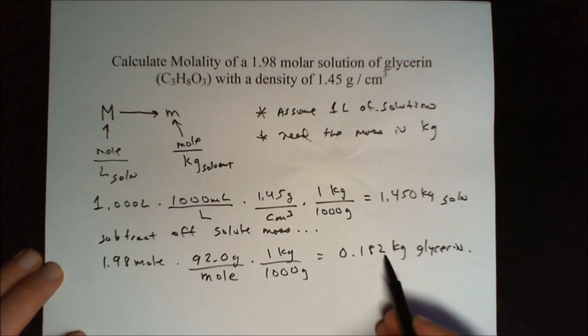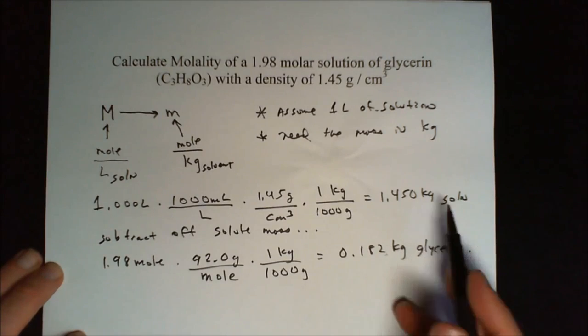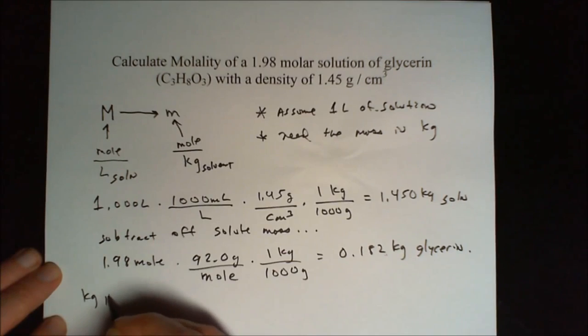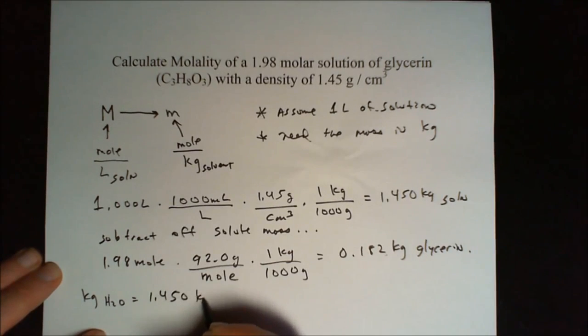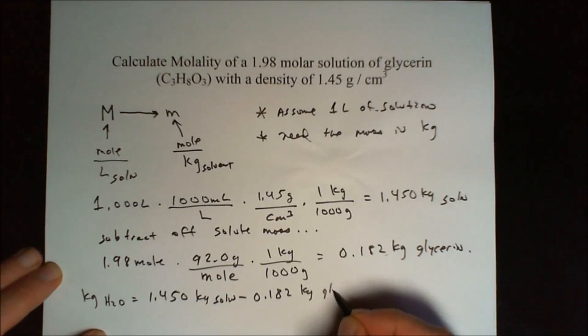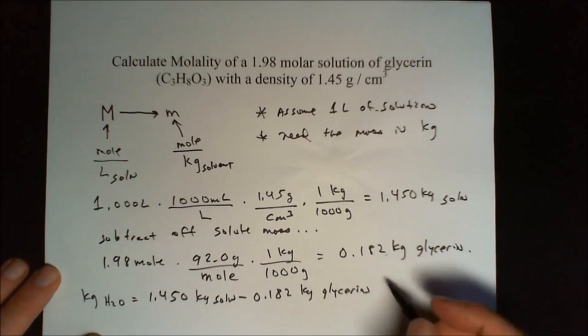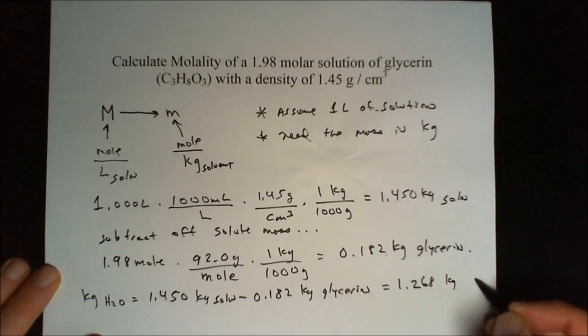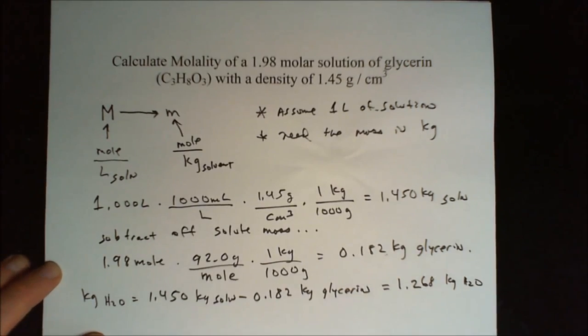Finally, we can subtract this kilograms of glycerin from our solution, and that will give us the kilograms of water. So our kilograms of H2O is equal to 1.450 kilograms of solution minus 0.182 kilograms of glycerin, which gives us 1.268 kilograms of water, which is our solvent.